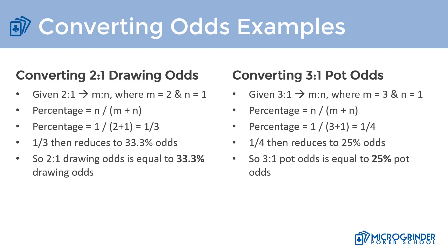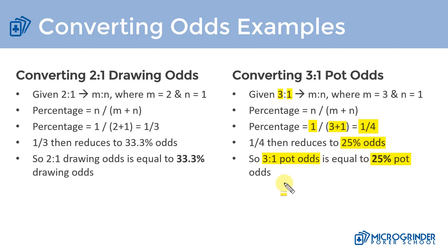Now let's convert three to one. Three to one means m equals three and n equals one. One divided by three plus one gives us one divided by four, which is 25 percent. So if we're offered three to one pot odds, we're being offered 25 percent pot odds. Don't worry if the meaning of pot odds isn't fully clear — we have a lecture dedicated to it and we'll revisit it multiple times throughout the course.